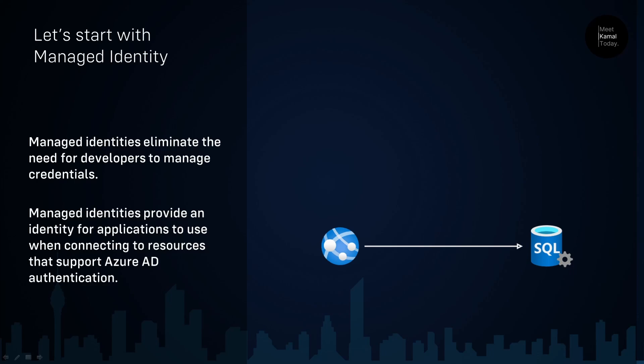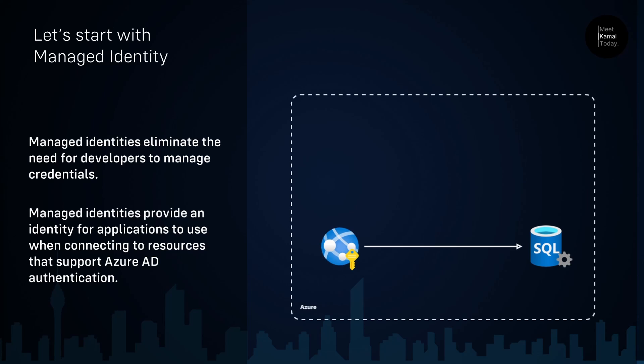Managed identities eliminate the need for developers to manage credentials. Let's say you have two resources on Azure: an App Service and an Azure SQL database. The application deployed in the App Service wants to talk to the Azure SQL database, so the App Service has to keep some kind of credential — in this case, a connection string. But when you think about it, these are all resources in Azure. They all live in Azure Fabric. So why do we really need to store credentials in different places? We actually don't have to. This is the problem that Azure managed identities solve.